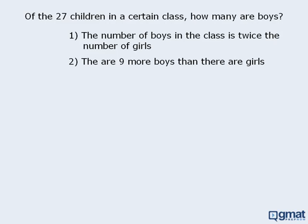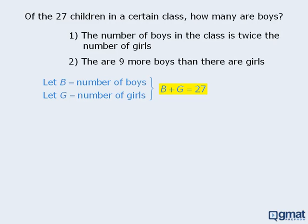In this example, we are told that there are 27 students in a class and some are boys. Let's let B equal the number of boys in the class. And since each child will be either a boy or a girl, let's let G equal the number of girls. We are told that there are 27 children in total, so we can write B plus G equals 27. The target question asks us to determine the number of boys. Now that we have summarized all of the information, we can examine the statements.